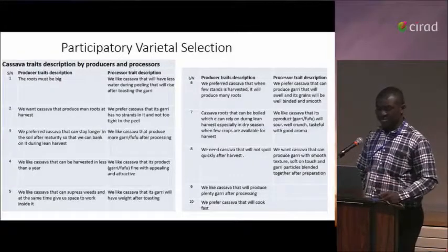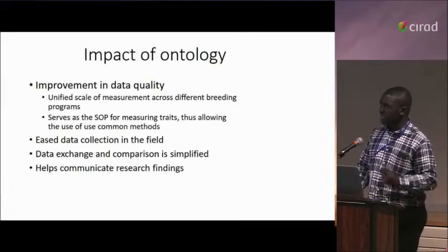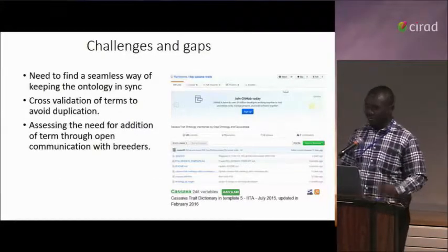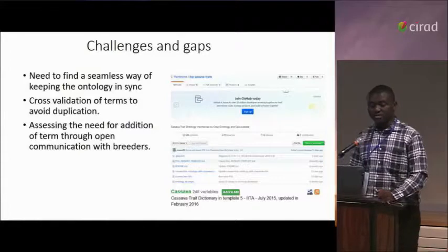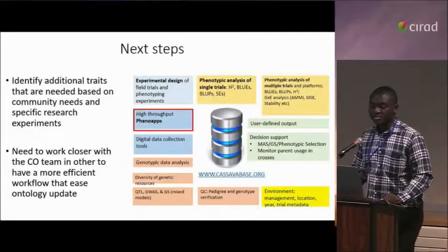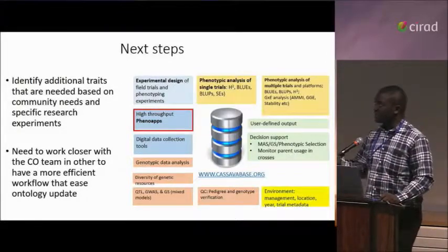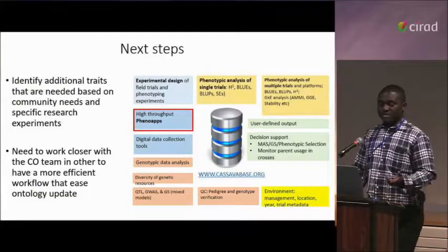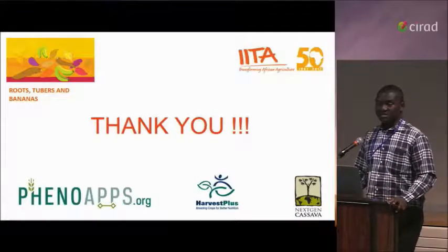As for how ontology has impacted us: it has improved our data quality, eased data collection in the field, and simplified the exchange and comparison of data. The challenges are keeping the ontology in sync — and I must commend Mary Angelic who is doing great work in this regard — and assessing the need for addition of terms through open communication with breeders. The next step is integrating most of the PhenoHapp tools into CassavaBase, which we consider CassavaBase version 2, and working more closely with the crop ontology team for a more efficient workflow.